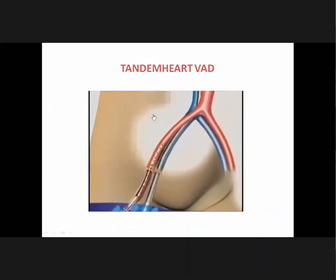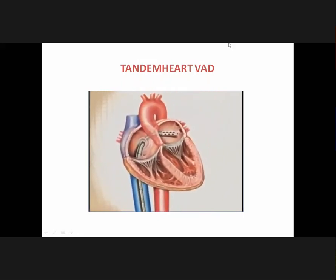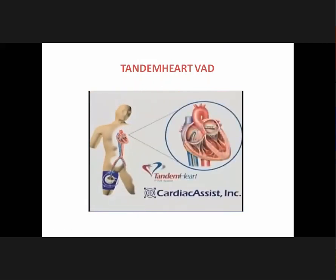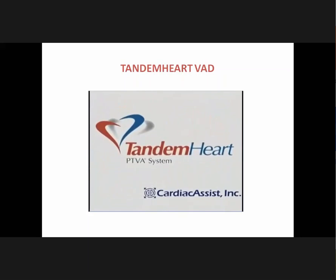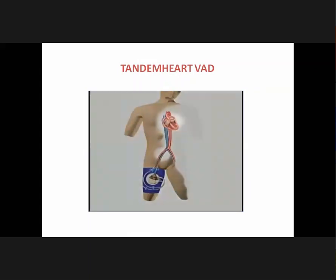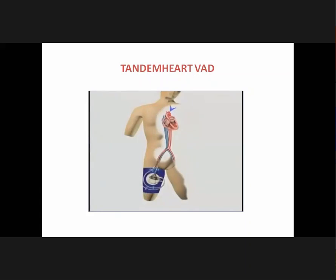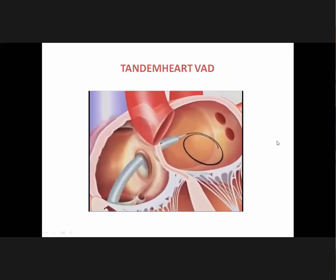In patients requiring extracorporeal circulatory support, evidence suggests earlier deployment is a critical determinant of success. Early support promotes cardiac recovery. The Tandem Heart system can provide up to 5.0 liters per minute of cardiac output. Preload reduction and systemic perfusion are achieved through left atrial to femoral artery bypass, with access from the femoral venous and arterial system. Oxygenated blood is drawn from the left atrium via a drainage cannula and returned via one or two arterial cannulae. The Tandem Heart can be inserted in the cath lab or operating room in as little as 30 minutes using a standard transseptal puncture.